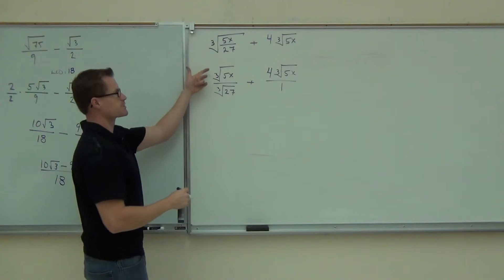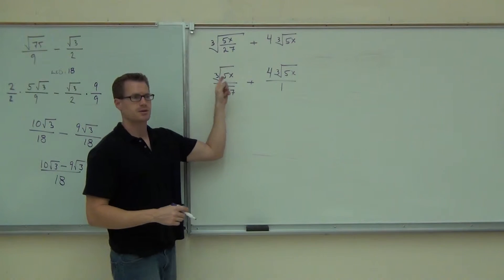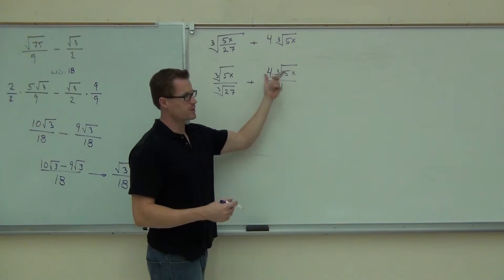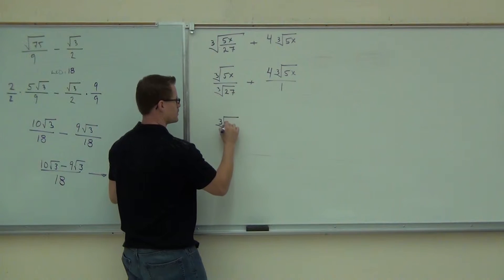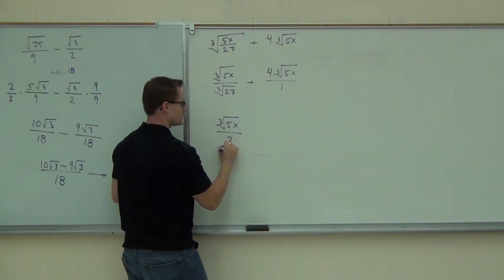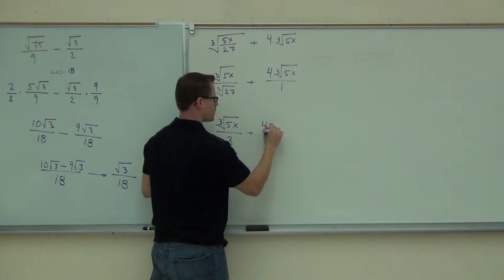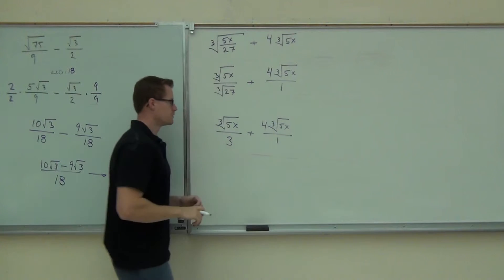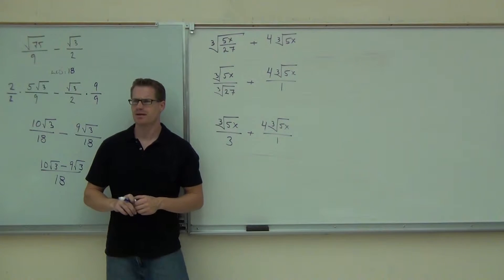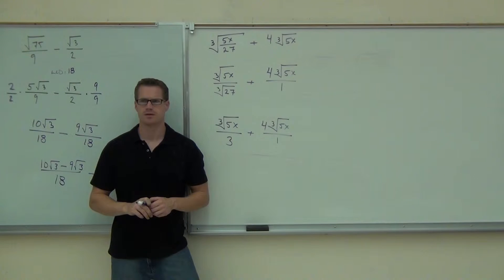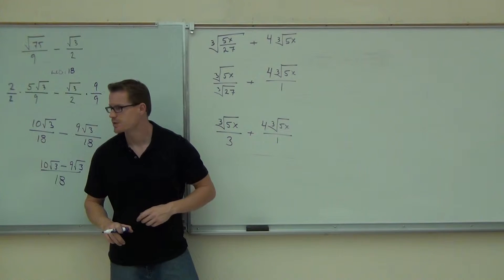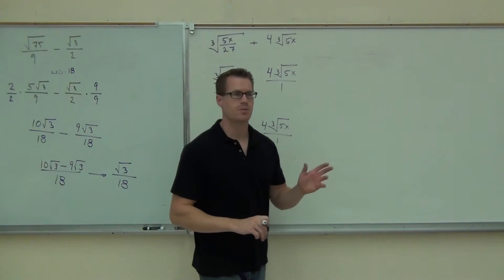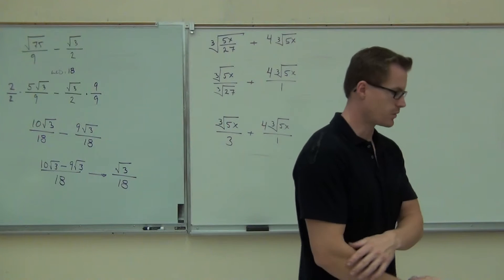So instead of the cube root of 5x, we'd look to simplify that too — but we can't. We're going to have the cube root of 5x over 3, plus 4 cube root of 5x over 1. Now find a common denominator — multiply what you have to, then combine your fractions.